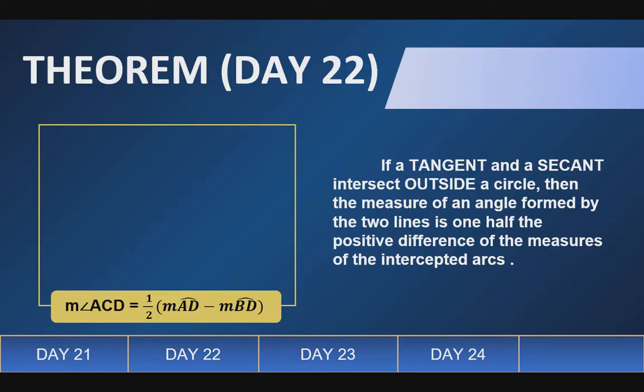Next, day 22 theorem, we have here, if a tangent and a secant intersect outside a circle, then the measure of an angle formed by two lines is one half the positive difference of the measure of intercepted arc. So, para mas maintindihan natin, let's illustrate. So, ito yung secant natin, at ito naman yung tangent natin.